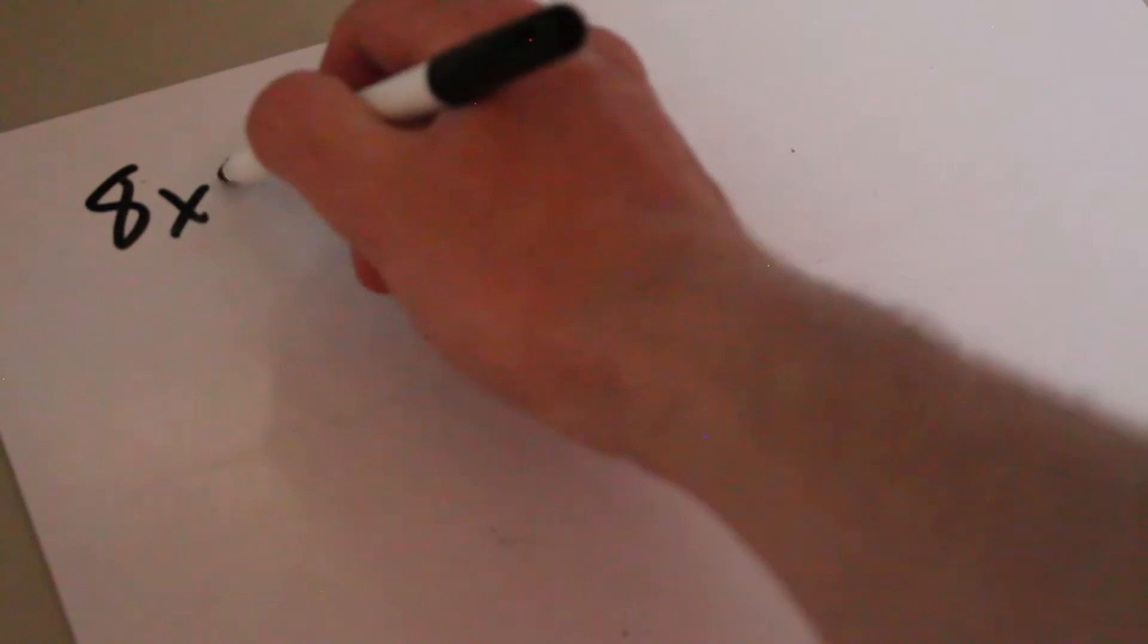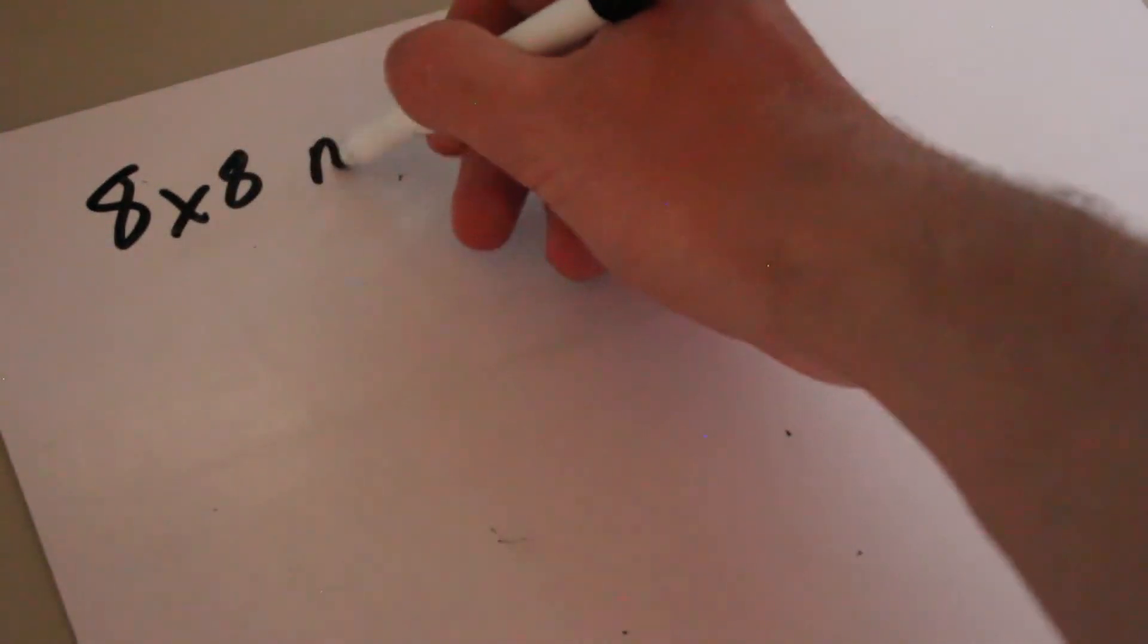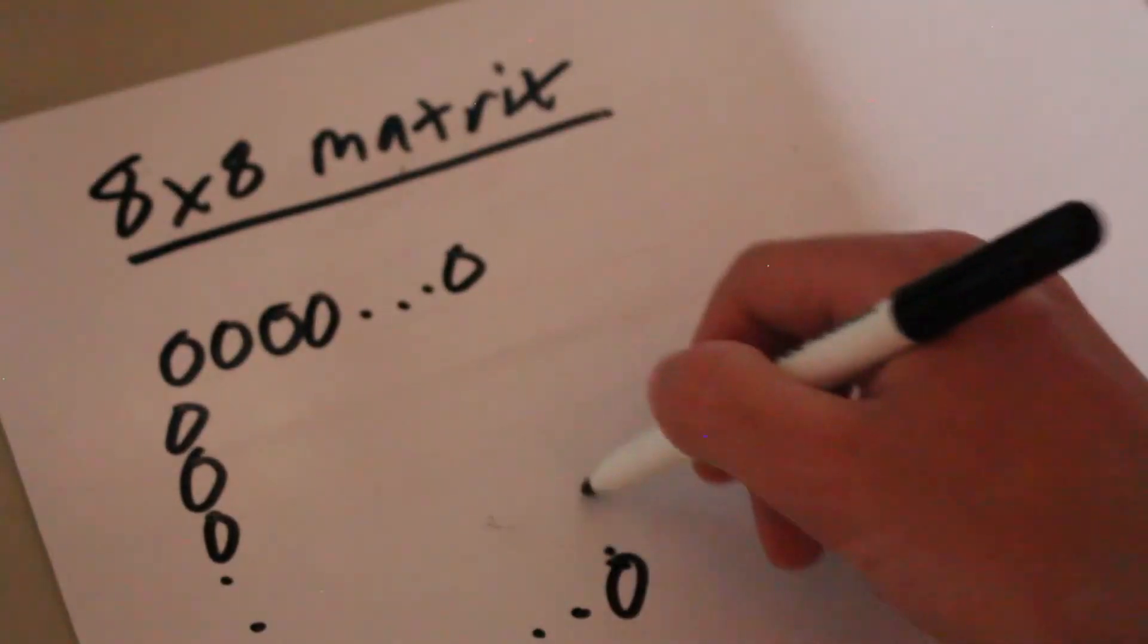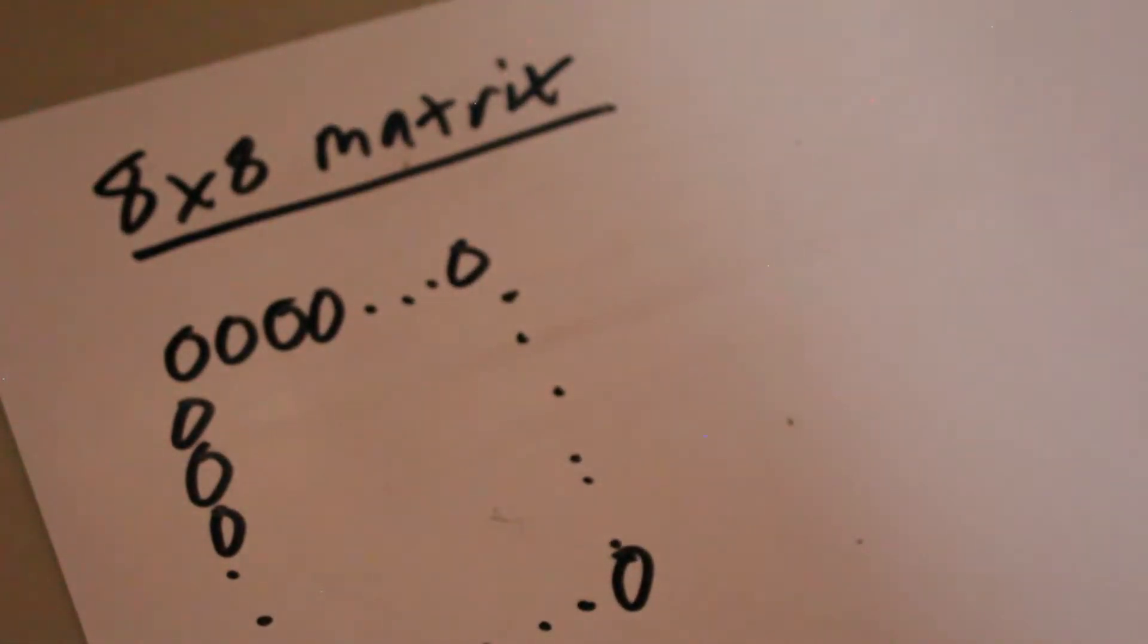First things first though, let's explore why we would need a matrix and why we couldn't just use a microcontroller's pins. First, let's consider an 8x8 matrix, which has a total of 64 pins.